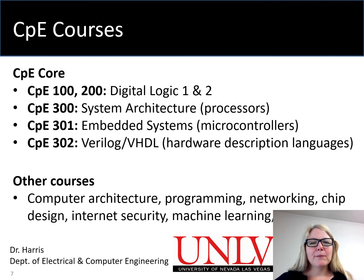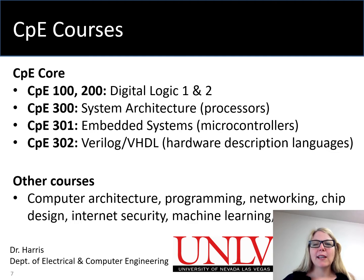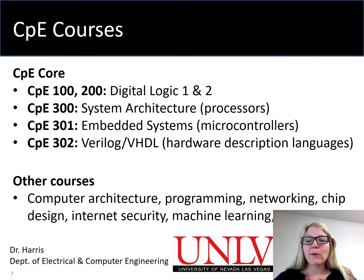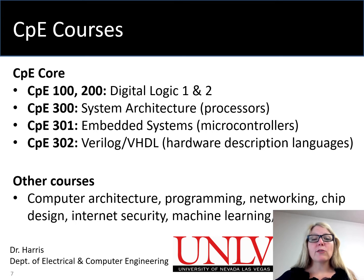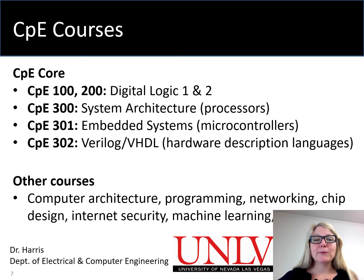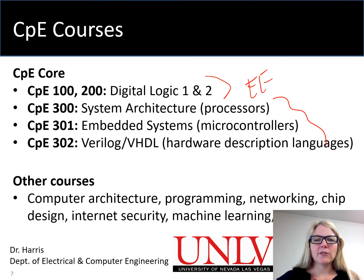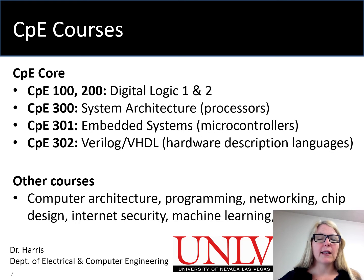So let's talk about the CPE courses. The 100 and 200 level courses are the basics: digital design, digital logic — the fundamentals of how we build circuits to do more complex things like processors, which is CPE 300, and microcontrollers for controlling robots and other devices. Then hardware description languages, and after those core courses you'll take choice courses where you can choose among computer architecture, chip design, internet security, machine learning, to name a few. Electrical engineers also take these courses, and they take CPE 300, 301, or 302, so there's a lot of overlap between EE and computer engineering.